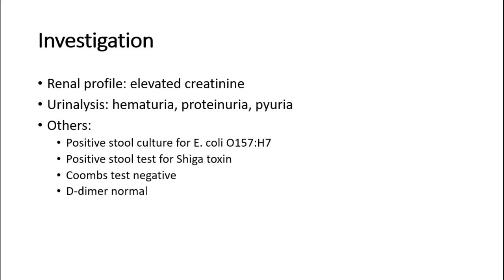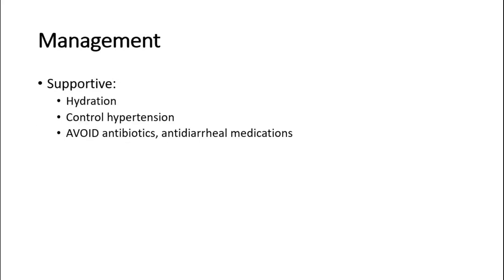A Coombs test will be negative, to rule out other causes of hemolytic anemia, and D-dimer will be normal — this is to rule out other conditions such as lupus or consumptive coagulopathy. For management, supportive care includes hydration, volume repletion, early hydration for diarrheal fluid losses, and blood pressure control. Remember to avoid antibiotics and anti-diarrheal medications, as these may increase the risk of developing hemolytic uremic syndrome.